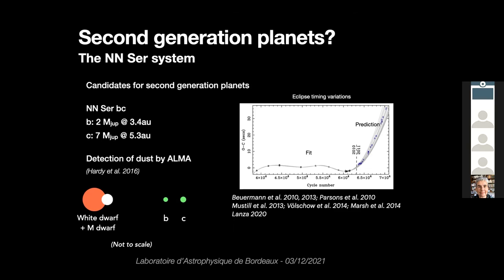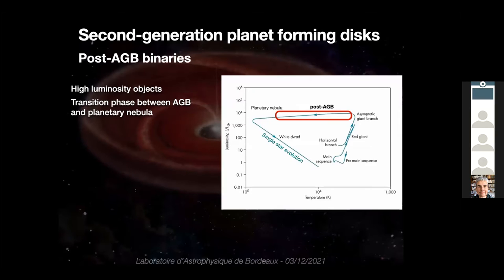Do we know candidates to be second generation protoplanetary disks? Of course we do. I think the main candidates are the ones we see around post-AGB binaries. The post-AGB phase in the life of a star is a transition phase between the giant branches and the planetary nebulae and white dwarf stages. As you can see in the HR diagram, the post-AGB phase is the most luminous phase of the life of a star, and it's thought to be relatively short because this is where the asymptotic giant branch star loses its envelope.